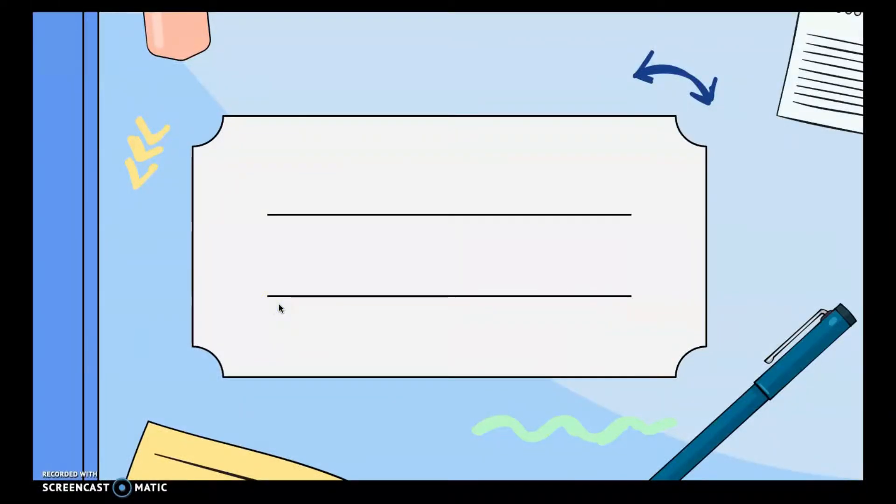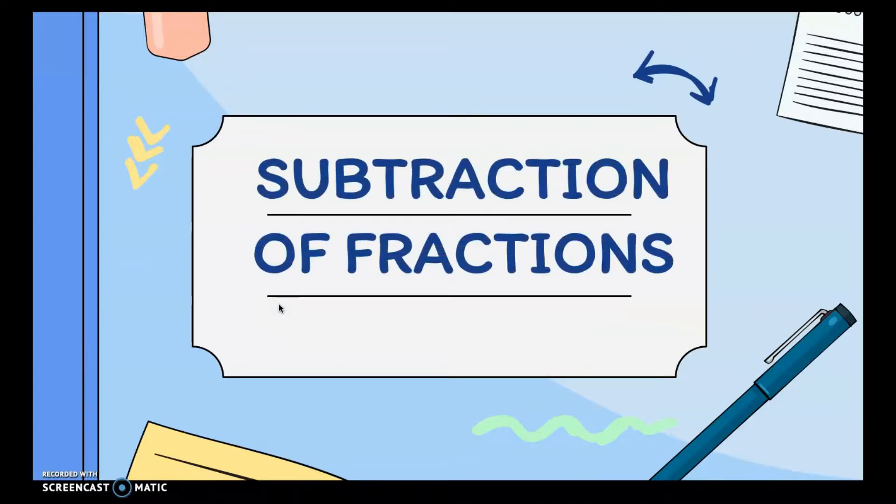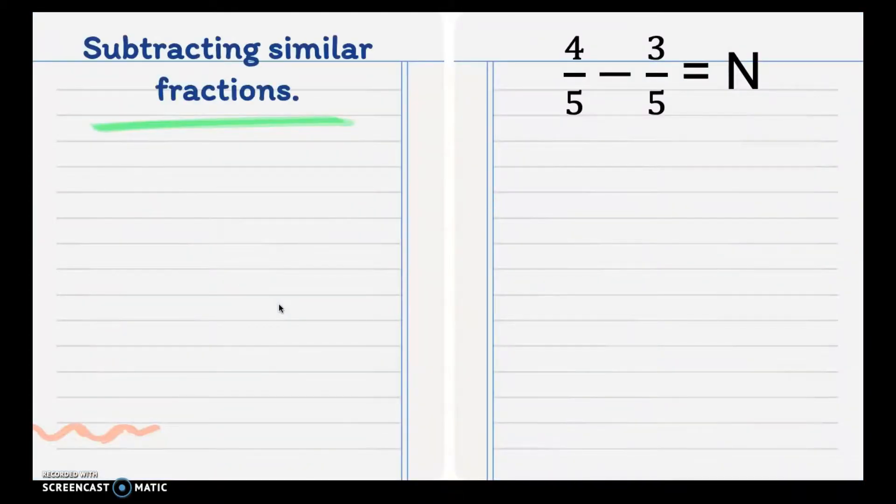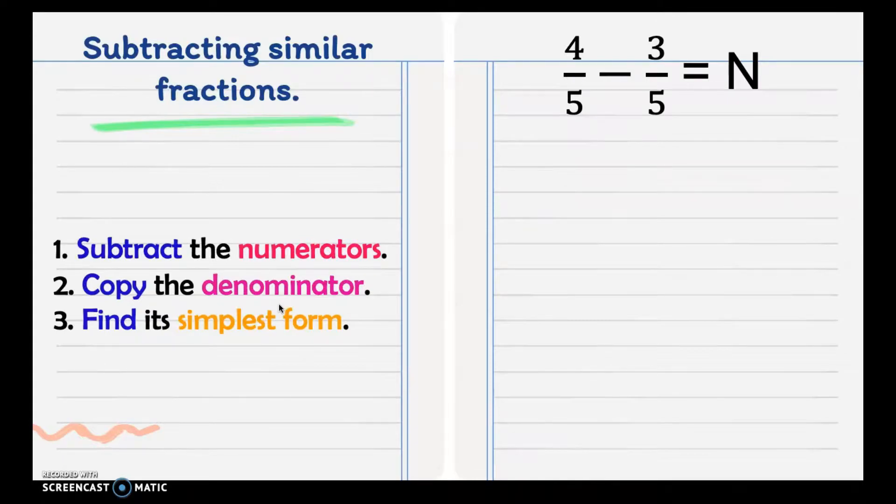Our discussion is about subtraction of fractions. First we subtract similar fractions. Similar fractions are fractions that have common denominator or the same denominators. Now let's subtract similar fractions. Here are the steps: first we subtract the numerators.